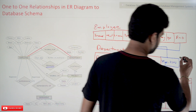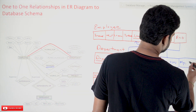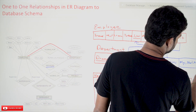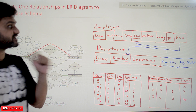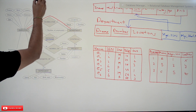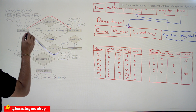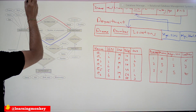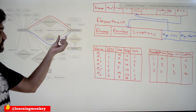The start date attribute needs to be shifted to the department as a column. We will take it as MGR_start_date, meaning manager start date, and it has been shifted to the department table. Why do we have to shift it there? That we will try to understand. We are converting this relationship 'manages,' and the reason for shifting the start date to the department — which has full participation — is very important to understand.